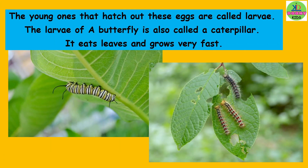Read with me children. The young ones that hatch out of these eggs are called larvae. The larvae of a butterfly is also called a caterpillar. It eats leaves and grows very fast.